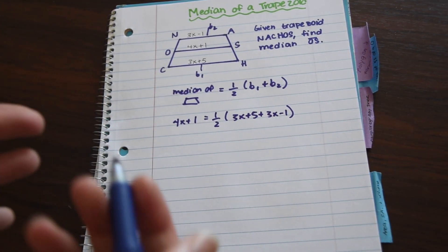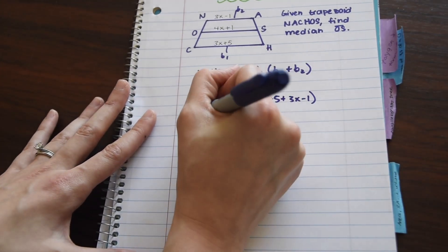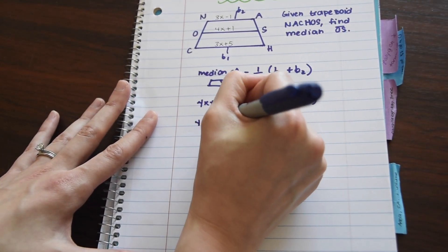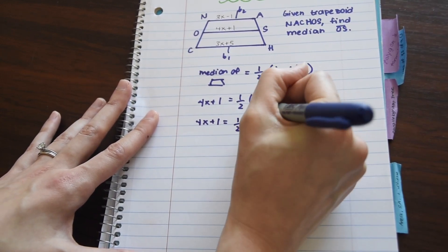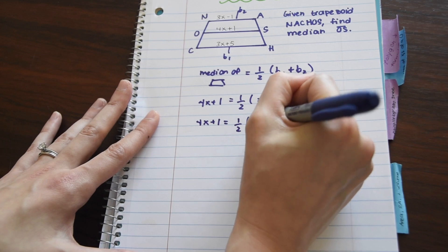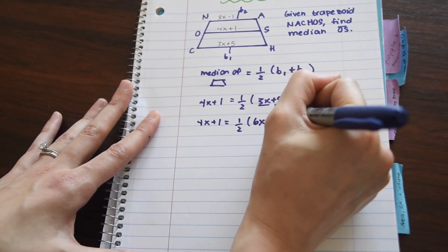And now we just have ourselves a nice little algebra problem. So we can combine like terms, so let's write 4X plus 1 equals one half, and now we can just combine 3X plus 3X, which gives us 6X, and then 5 minus 1, which just gives us 4.